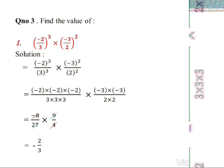For the second part (-3/2)²: minus×minus = plus, so (-3)² = 9, and 2² = 4. So the second rational number is 9/4. Now multiply: first rational number is -8/27 multiplied by 9/4. Cancel common factors: 9 and 27 cancel (9×3=27), and 4 and 8 cancel (4×2=8). This gives (-2/1) × (1/3) = -2/3. The answer is -2/3.